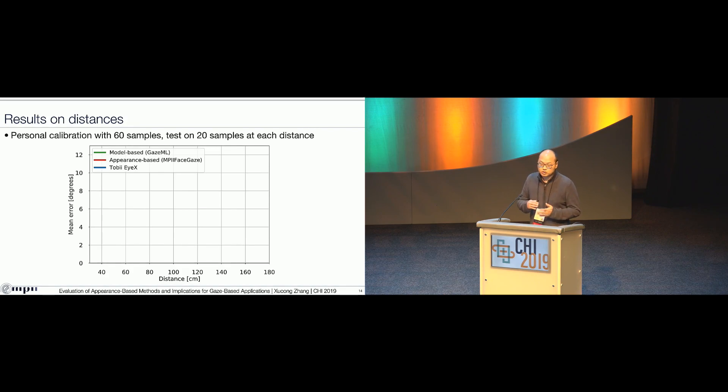Next, I'm going to show you two experiments from our paper. The first one will be gaze estimation error across different distances. Here, the X-axis is the distance between the user and the camera and the Y-axis is the gaze estimation error in degrees. The lower, the better. And please note that for each distance, we use 60 samples for personal calibration and test on the rest, over 20 samples. First, I want to show you the performance from the Tobii RX, which is the commercial eye tracker. As you can see, the Tobii can achieve very good performance, which is around 0.5 to one degree gaze estimation accuracy. However, the operation distance is limited. There is no gaze output for longer distances or for near distances.